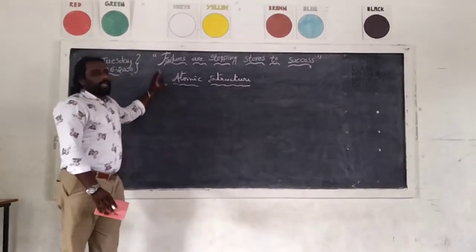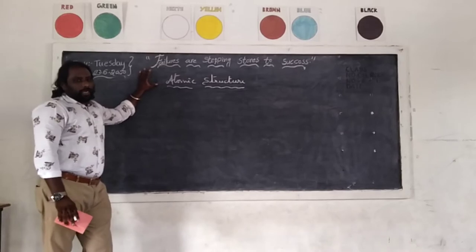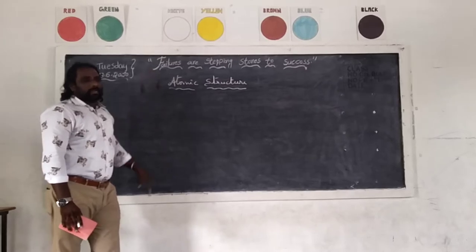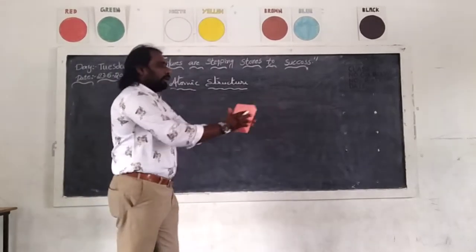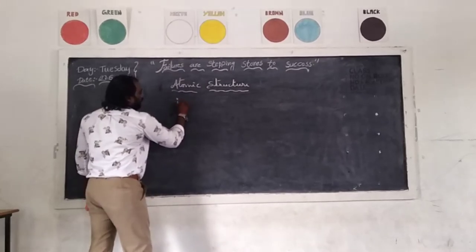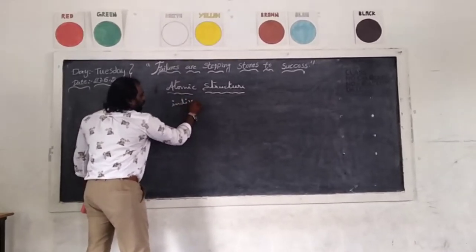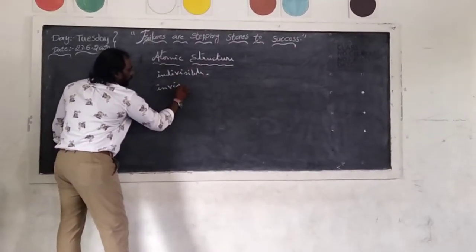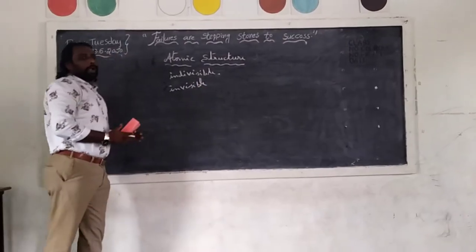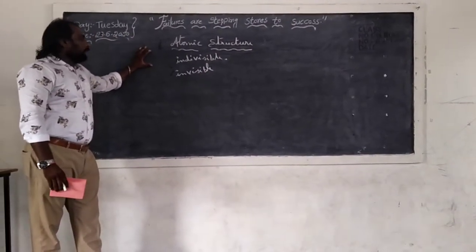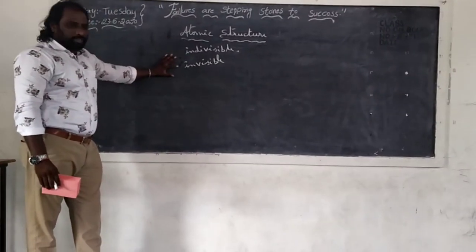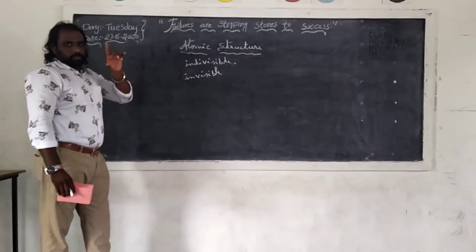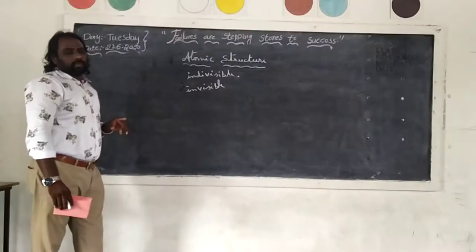Now, I am going to explain atoms. According to John Dalton, what he has told, any particle similarity, but we can say atoms. Atoms are indivisible and invisible. He has two properties. Atoms are indivisible and invisible according to John Dalton.